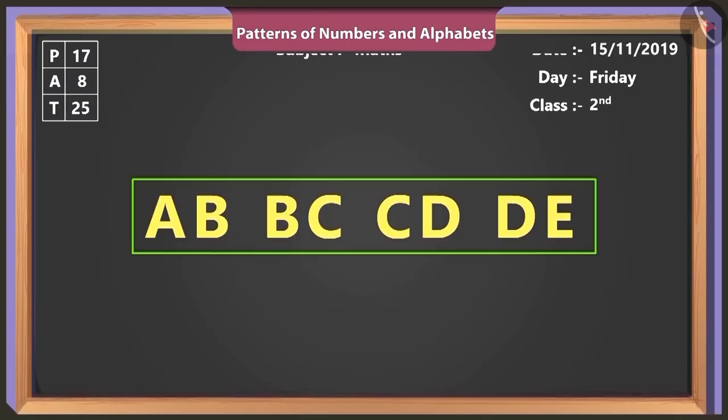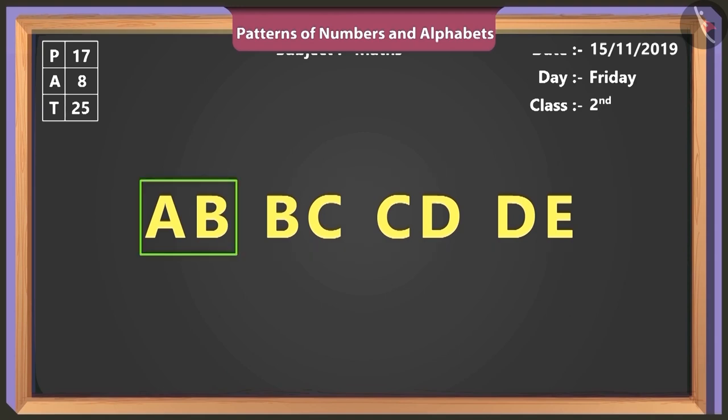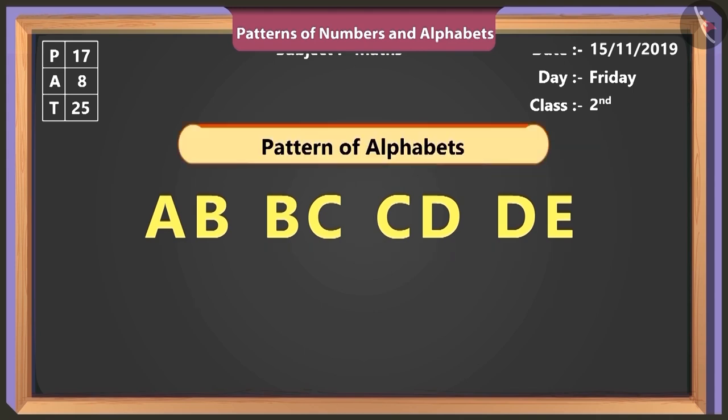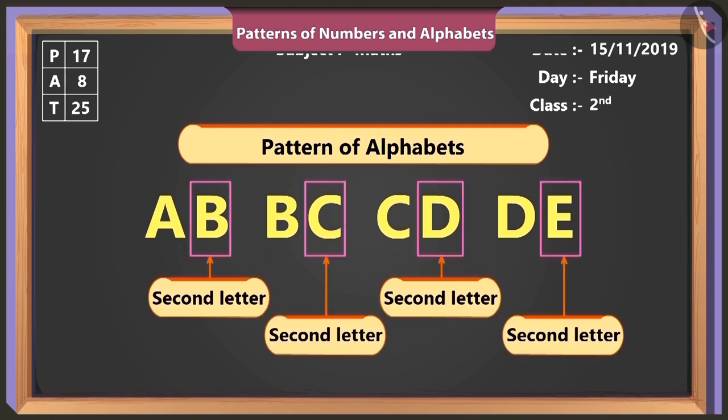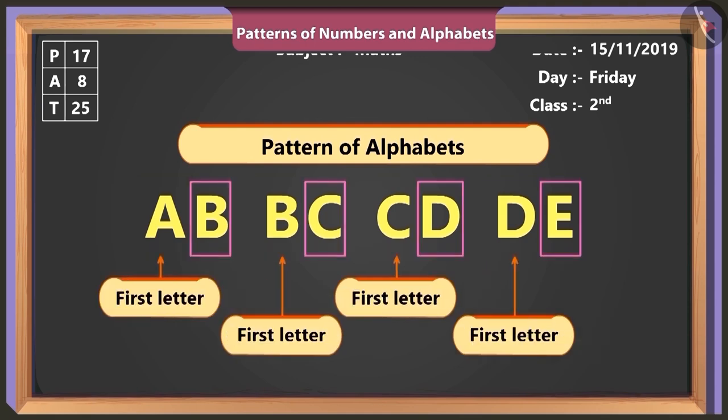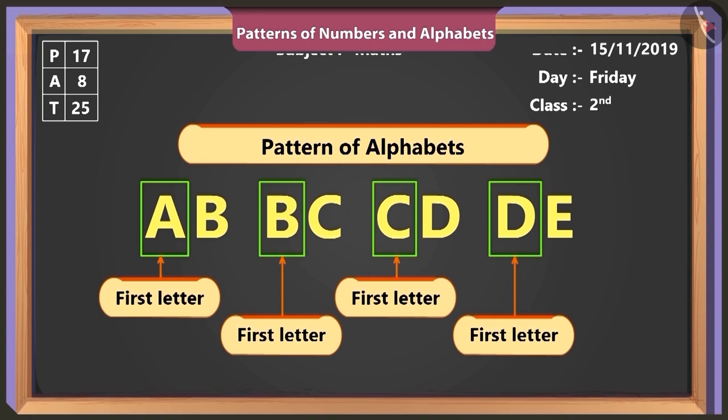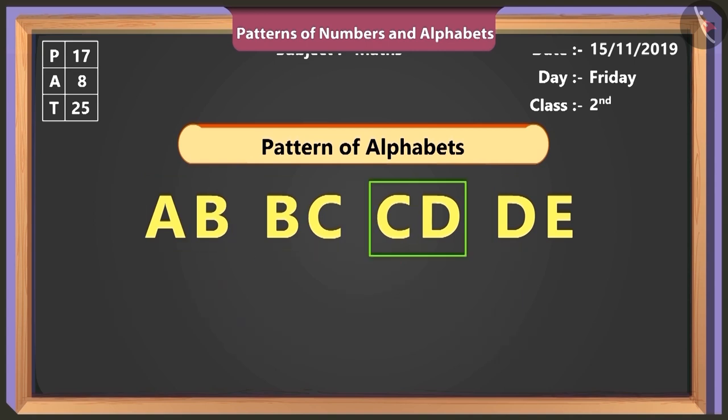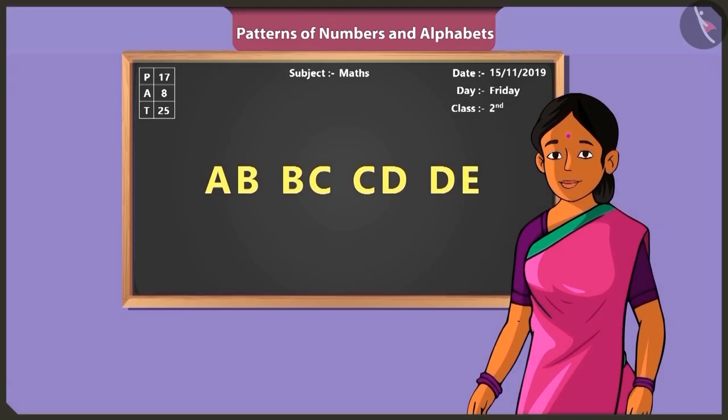A, B, B, C, C, D, D, E. Here each term is of two alphabets. The second alphabet of the first term becomes the first alphabet of the second term. And the pattern is getting built further.